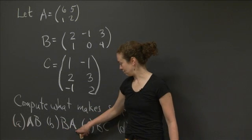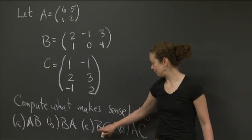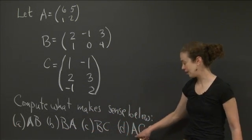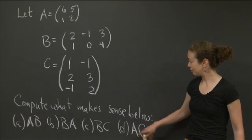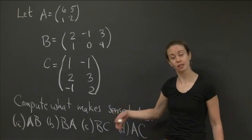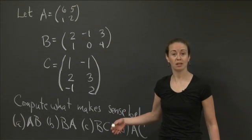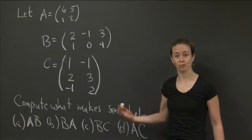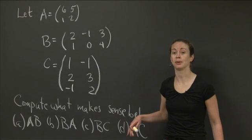B is B times A. C is B times C. And D is A times C. So I want you to find, multiply the matrices that make sense to multiply, and then the ones that don't, maybe make sure you understand why. Give yourself a brief explanation of why you can't multiply them.